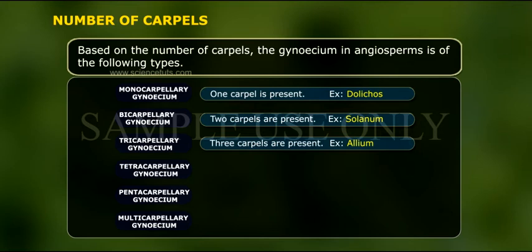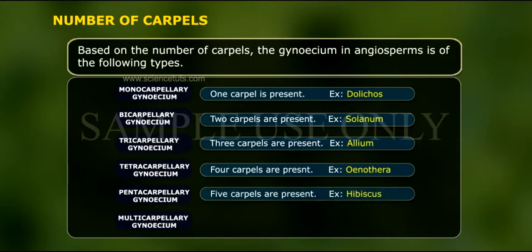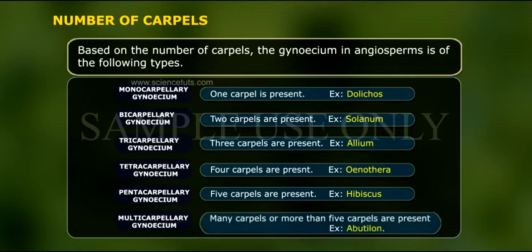Example: Allium. Tetracarpillary gynoecium: four carpels are present. Example: Oenothera. Pentacarpillary gynoecium: five carpels are present. Example: Hibiscus. Multicarpillary gynoecium: many carpels, or more than five carpels, are present. Example: Abutilon.